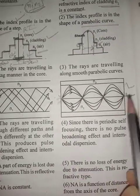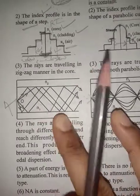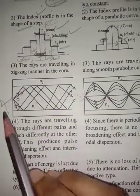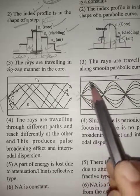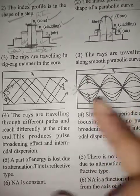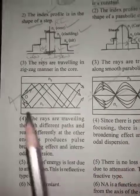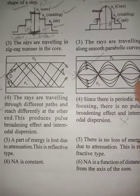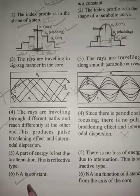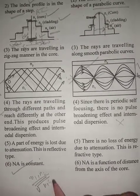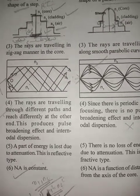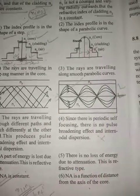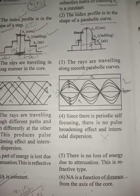In graded index fiber, all rays travel different paths and take different times, so dispersion is less — it is a bit better than step index fiber. For step index fiber, the numerical aperture is constant because n1 and n2 are constant; numerical aperture equals √(n1² - n2²). For graded index fiber, the numerical aperture varies as a function of distance.